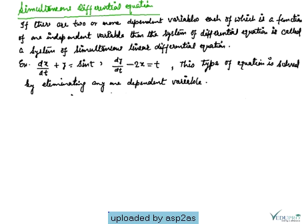Defined as: if two or more dependent variables exist, of which each is a function of one independent variable, then the system of differential equations is called a system of simultaneous linear differential equations. Here we can see an example: dx/dt + y = sin t.